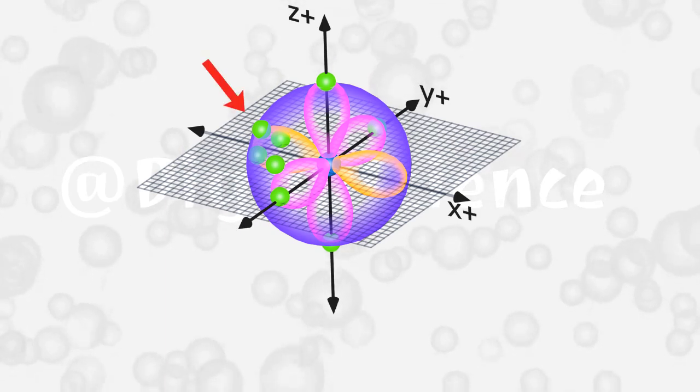On this side there are four electrons clustered together. Because on this side there are more electrons, we can say that this side is negatively polarized.